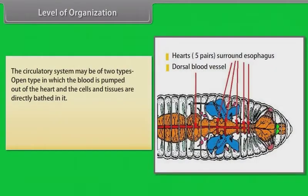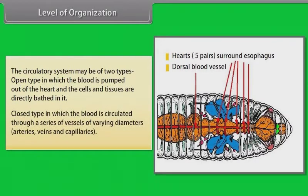The circulatory system may be of two types. Open type, in which the blood is pumped out of the heart and the cells and tissues are directly bathed in it. Closed type, in which the blood is circulated through a series of vessels of varying diameters — that is, arteries, veins and capillaries.